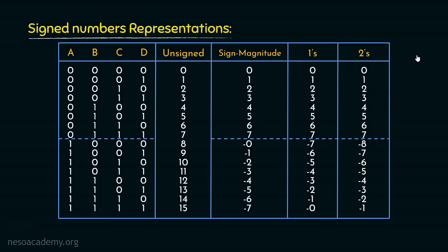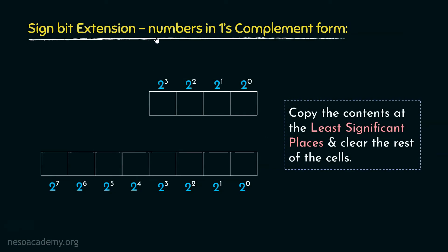If you remember, in the session on representation of binary numbers, we learned that among all the different representations, ones complement falls under the non-weighted category. For the positive counterparts we get to use the weights, however for the negative counterparts the bits are achieved by toggling the bits of the positive counterparts. Also, the patterns for the positive counterparts are the same in all representations. Due to this reason, positive numbers in ones complement form can be transferred from a smaller register to a larger one using the same rule as unsigned numbers — we copy the contents at the least significant places and clear the rest of the cells.